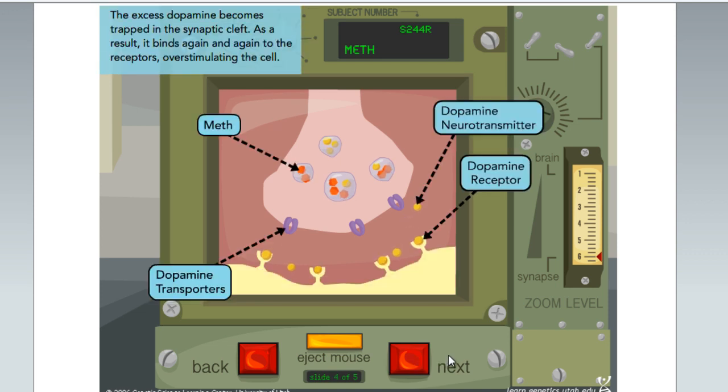The excess dopamine becomes trapped in the synaptic cleft. As a result, it binds again and again to the receptors, overstimulating the cell.